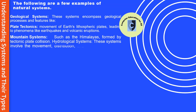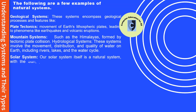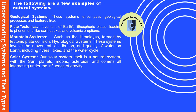Hydrological systems involve the movement, distribution, and quality of water on Earth, including rivers, lakes, and the water cycle. Our solar system itself is also a natural system, with the sun, planets, moons, asteroids, and comets all interacting under the influence of gravity.